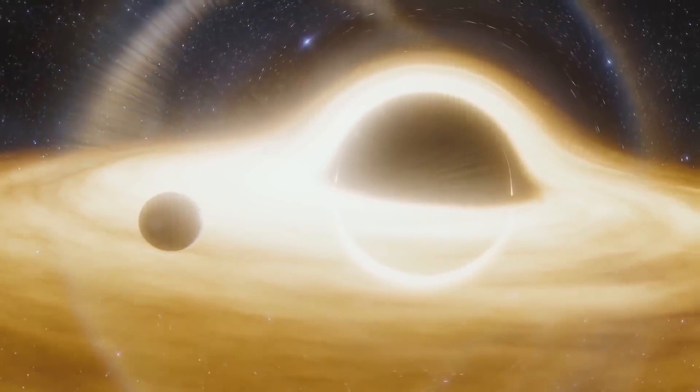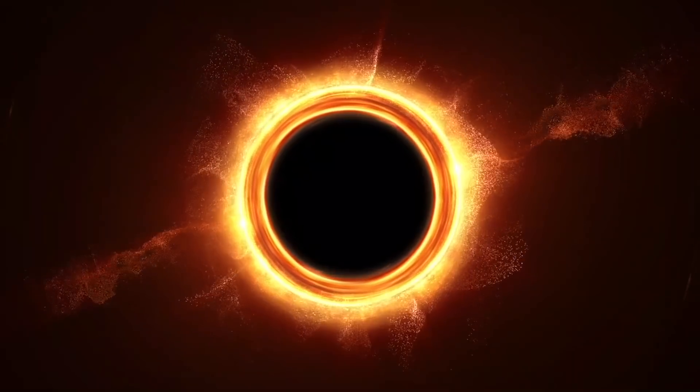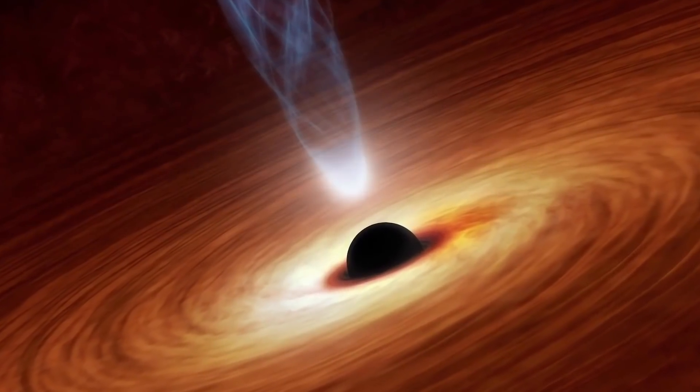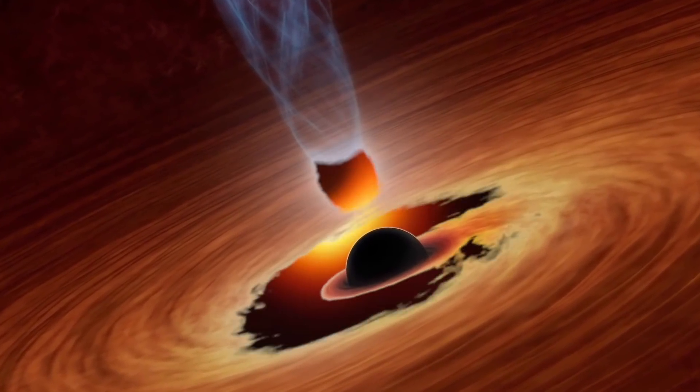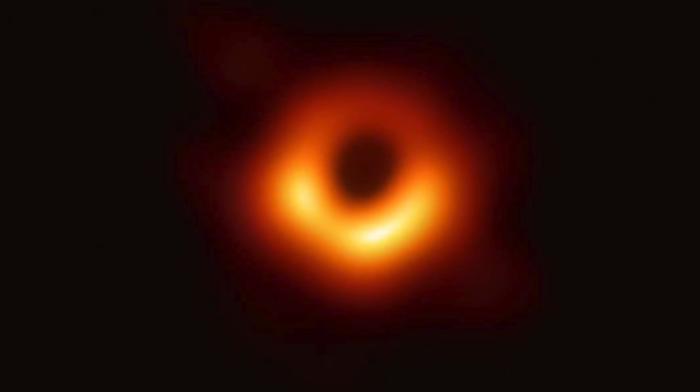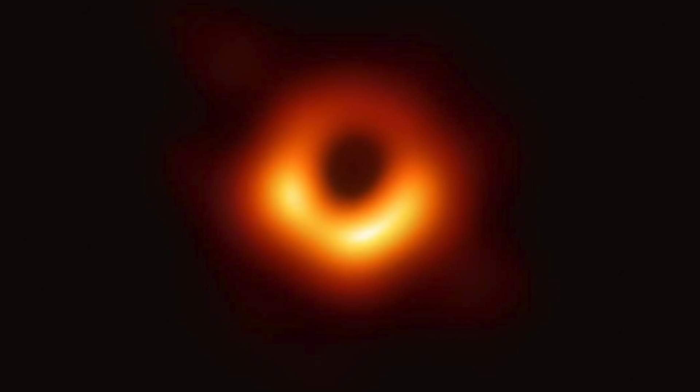The researchers were also able to determine the distance of the black hole from Earth, and it is traveling at around 45 kilometers or 28 miles per second. This implies that it was most likely kicked by the supernova that gave birth to it, starting it on its lonely voyage through the cosmos.